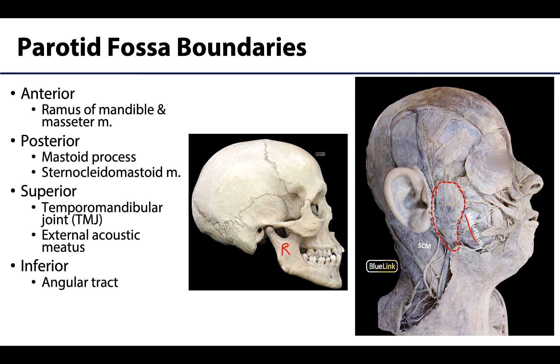The posterior boundary is going to be formed by the mastoid process of the temporal bone and your sternocleidomastoid muscle, which if you recall is attached to the mastoid process.